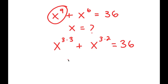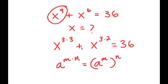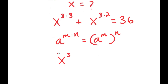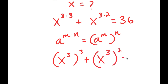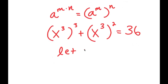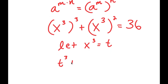Now, from here, if I have something in the form a to the power of m times n, this is equal to a to the power of m to the power of n. So x to the power of 3 times 3 equals x to the power of 3 to the power of 3, and x to the power of 3 times 2 equals x to the power of 3 to the power of 2, and this equals 36. Now I'm going to let x to the power of 3 equal t, so I get t to the power of 3 plus t squared is equal to 36.